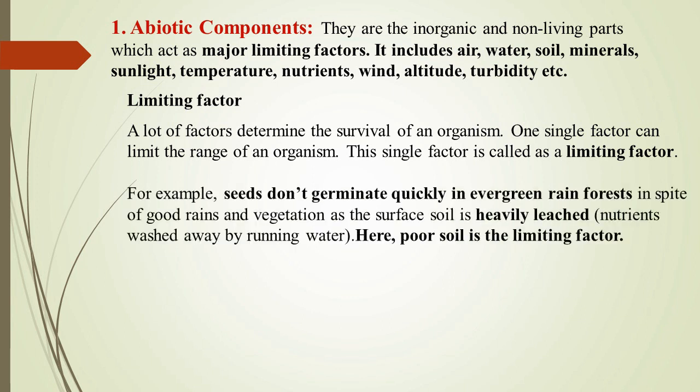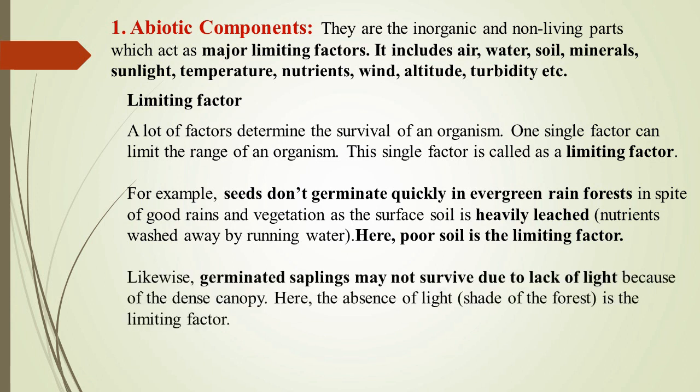For example, seeds don't germinate quickly in evergreen rainforest in spite of good rains and vegetation. Why? Because soil is a problem — it is heavily leached, and there is nutrient loss in the soil. So there is a limiting factor playing its role. Likewise, germinated saplings may not survive due to lack of light, so light becomes a limiting factor where there is a forest area. That's why it is important to understand the abiotic components as limiting factors in the ecosystem.